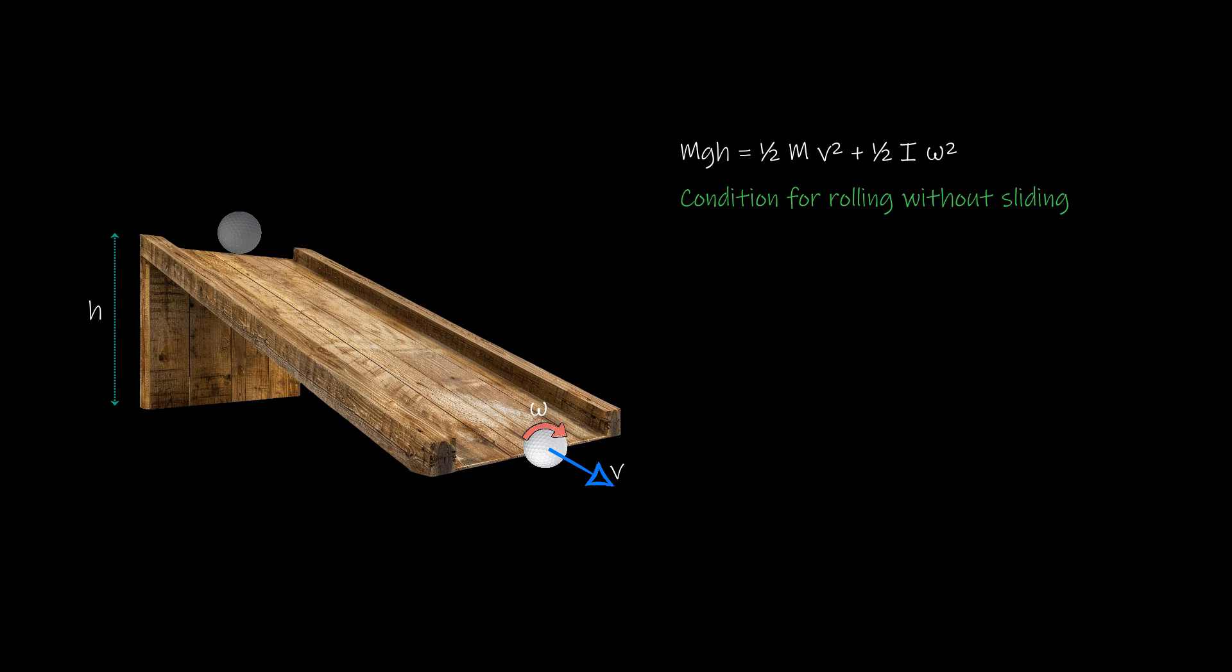You can say this also becomes a condition for identifying if the object is rolling or not. If this equation holds true, we can safely say that the object is rolling. And if it slides or slips, we know that kinetic friction would kick in and as a result, there would be thermal energy losses and this equation will not be valid anymore.